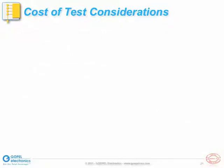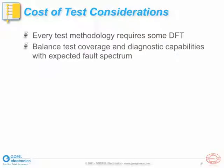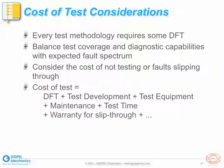When we are trying to identify the best test strategy for a particular product we are building, we need to consider a number of things, such as the available time for test as dictated by the time of the production line, the available test access on the unit under test, and the type of circuitry we want to test. Any test methodology requires some form of design for test, whether it is the placement of test points in the case of a bed of nails test, or flying probe testers, or the availability of a scan chain or boundary scan testing. So when considering the cost of test, we need to take into account the cost of design for testability, which would include design time and material cost, for example.